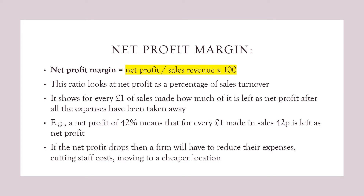For the net profit margin, you do net profit divided by sales revenue times that by 100. This ratio looks at net profit as a percentage of the sales turnover. It shows for every £1 of sales a business makes, how much of it is left as net profit after all the expenses have been taken away. For example, if there was a net profit of 42%, that means for every £1 made in sales, 42p is left as net profit. Now, if the net profit margin drops, that means a firm will have to reduce their expenses, either by cutting staff cost or moving to a cheaper location.